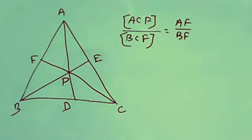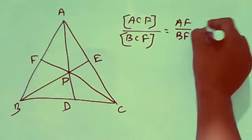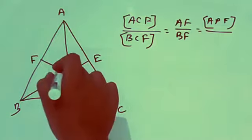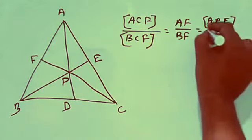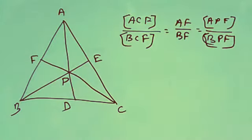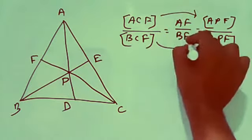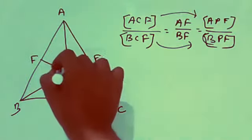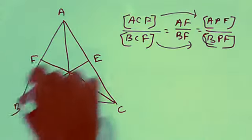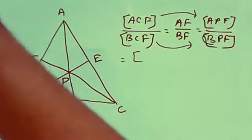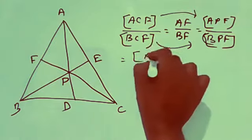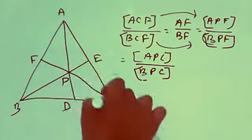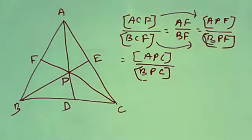Also, that is equal to area(APF) divided by area(BPF). If we subtract: area(ACF) minus area(APF) over area(BCF) minus area(BPF), we get area(APC) divided by area(BPC). So AF/BF is equal to area(APC) divided by area(BPC).